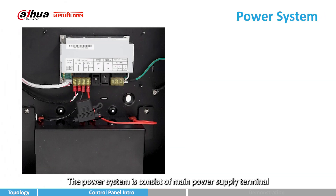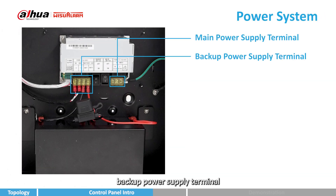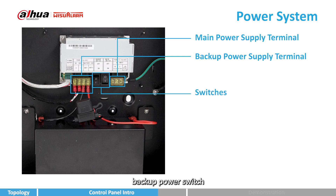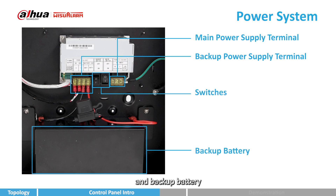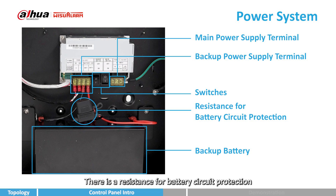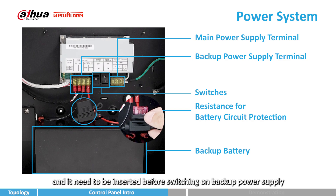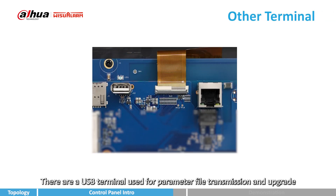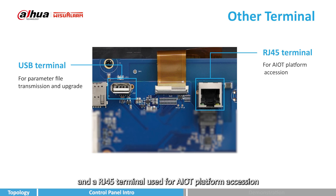The power system consists of main power supply terminal, backup power supply terminal, main power switch, backup power switch, and backup battery. There is a resistance for battery circuit protection, and it needs to be inserted before switching on the backup power supply. There is also a USB terminal used for parameter file transmission and upgrade, and an RJ45 terminal used for AIoT platform access.